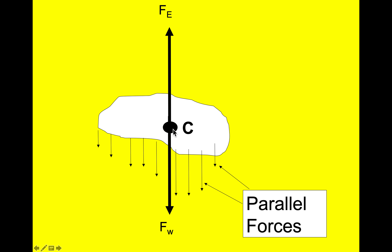When you take all those things into account, what they refer to as the center of gravity is the one central point where you assume all the weight to be located. If you take all these downward parallel forces and average them out, they'll appear to be coming from this one central location acting straight down. All these forces added together create this downward force — what we refer to as the force of weight.